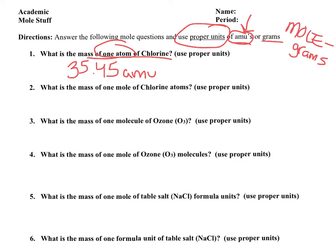But if I said, what is the mass of one mole of chlorine atoms? Remember, one mole really means that there's 6.02 with those 21 zeros after it, because you'd move the decimal point 23 places to the right. That's a huge number of chlorine atoms.